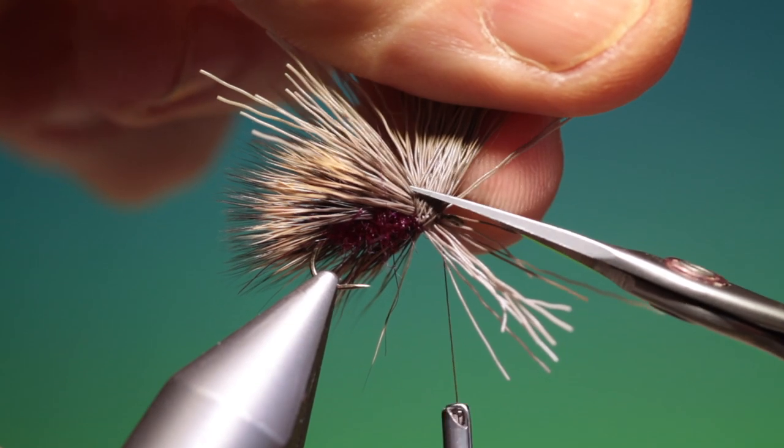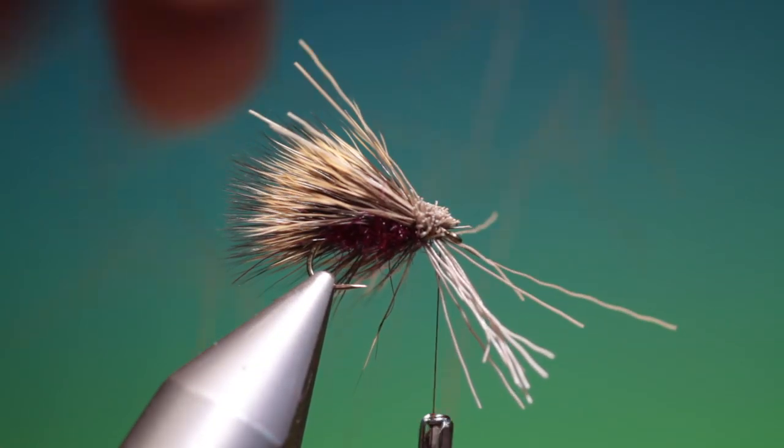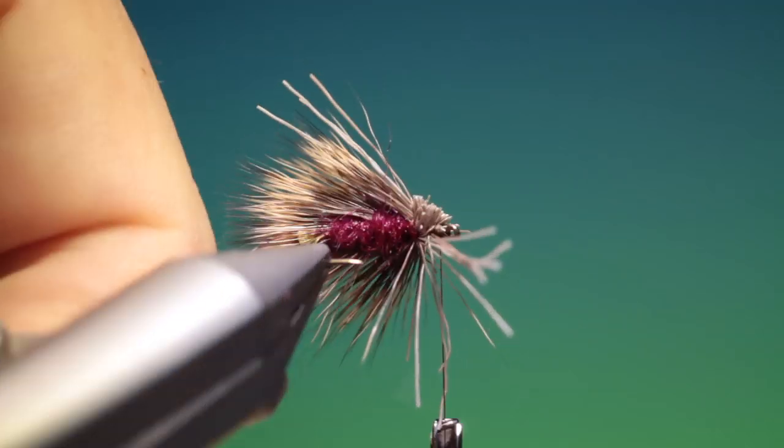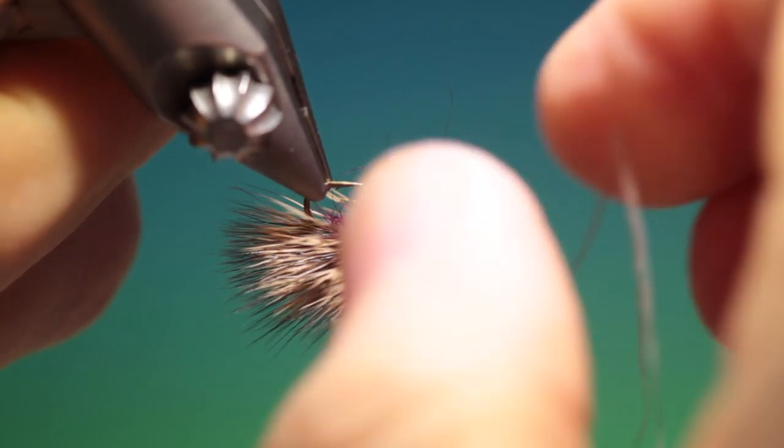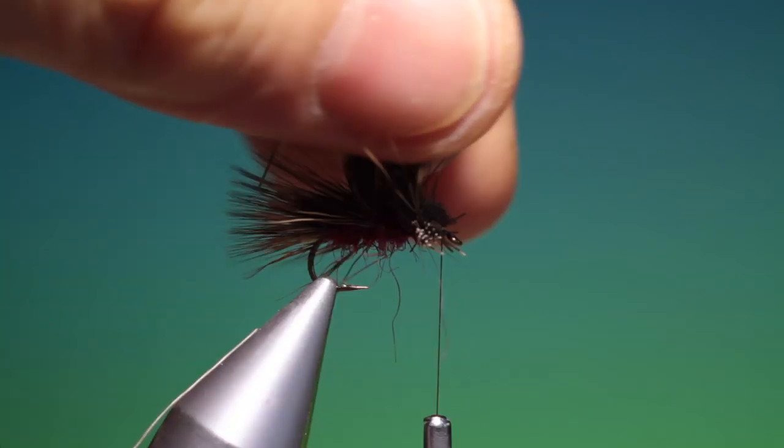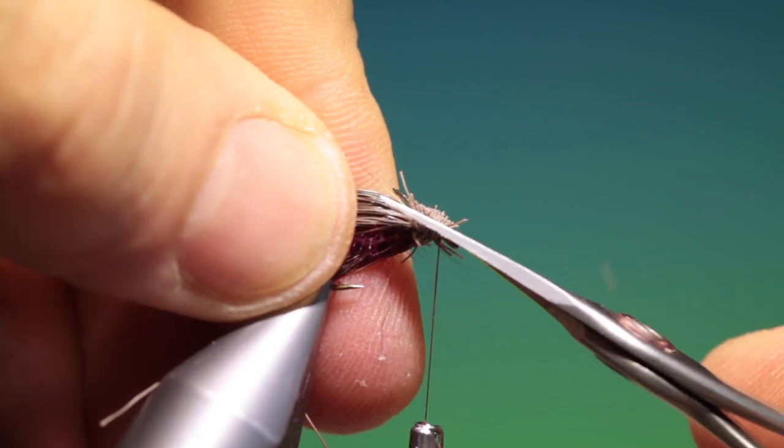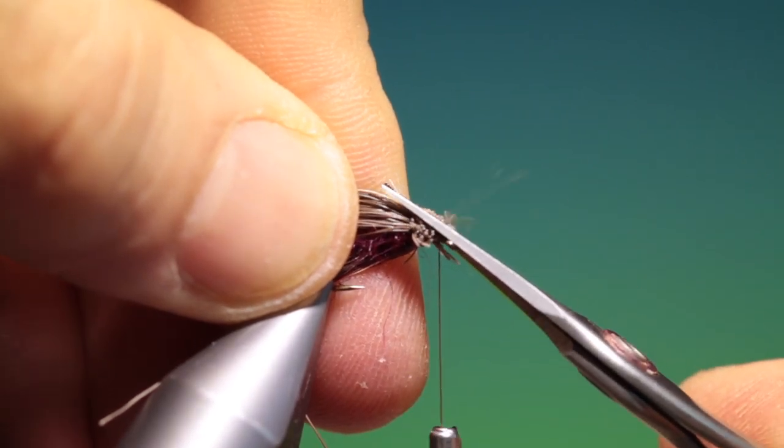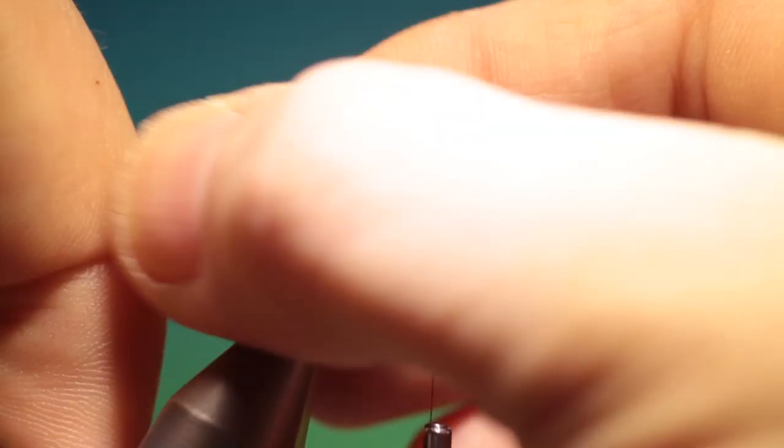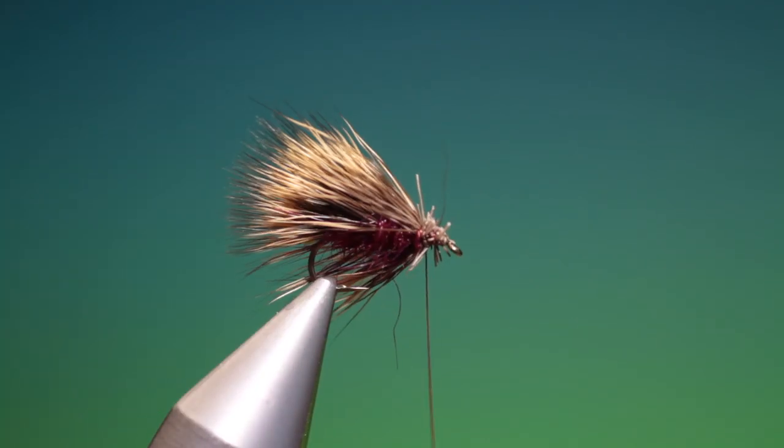Pull everything up again. Trim it away. Pull off these others. And trim this down, ready for the next bunch or the next bit of dubbing. And go back into the wing base.